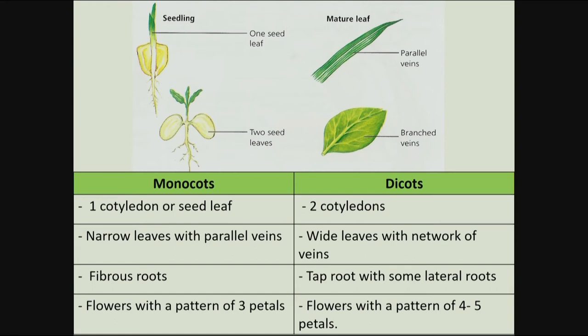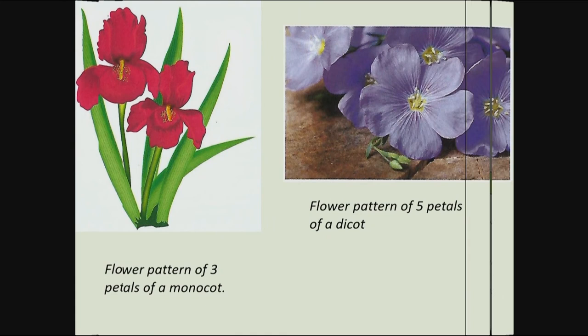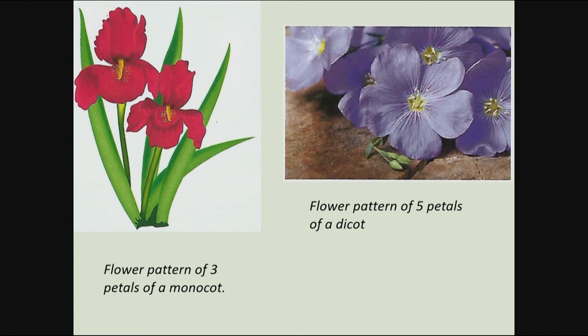Looking at the flower patterns of monocots and dicots: for monocots, the flower pattern normally has three petals. However, for dicots, the flower pattern normally has five petals, as you can see on the diagram.